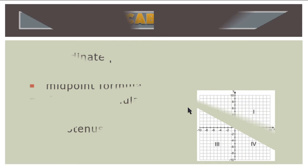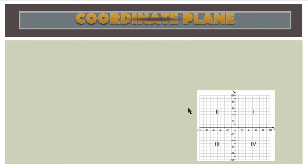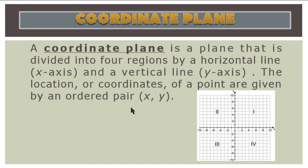Let's start with the coordinate plane. In the rectangular coordinate system or the Cartesian coordinate system, the coordinate plane has four regions. A coordinate plane is a plane divided into four regions by a horizontal line, which is the x-axis, and a vertical line, which is the y-axis. The location or coordinates of points are given by an ordered pair in the form of x and y.